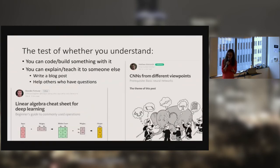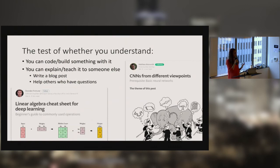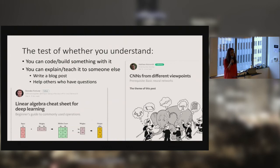There are two tests of whether you understand something: one is whether you can code it and build something with it, and the other is whether you can explain it to somebody else. Ways to practice explaining what you're learning: one is to write a blog post. Remember, you don't have to be an expert to start blogging. Your target audience is the person that's just one or two steps behind you, and you're actually best positioned to help that person.